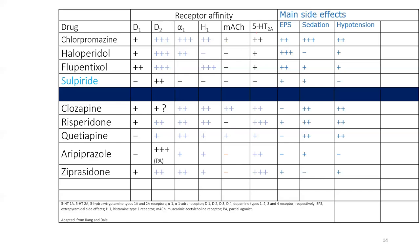In terms of clinical importance, the D2 receptor is the most important, followed by the others. The key receptors to focus on are D2, alpha-1, H1, and muscarinic, and only then do we discuss the others like D1.